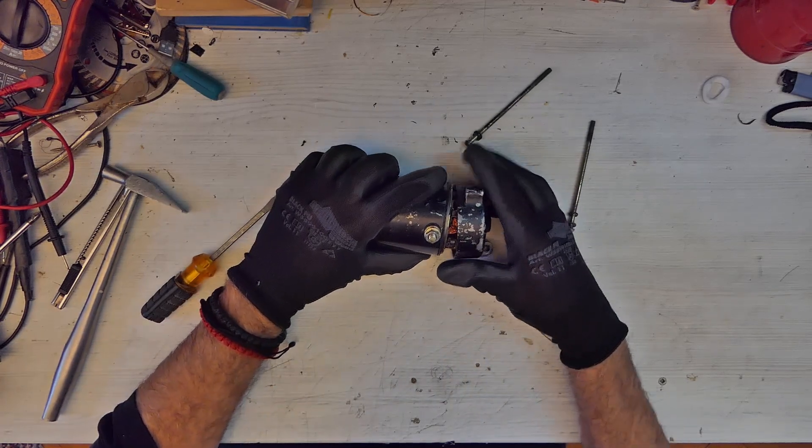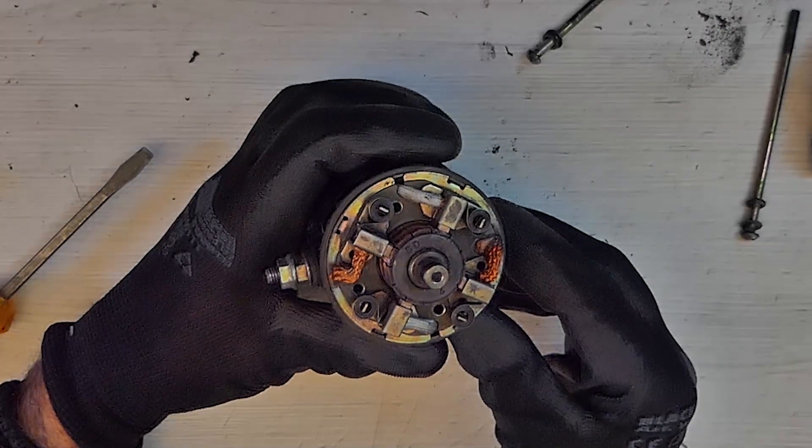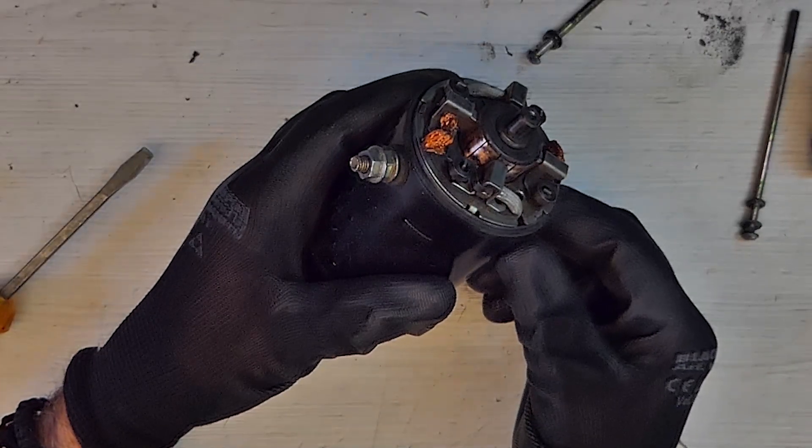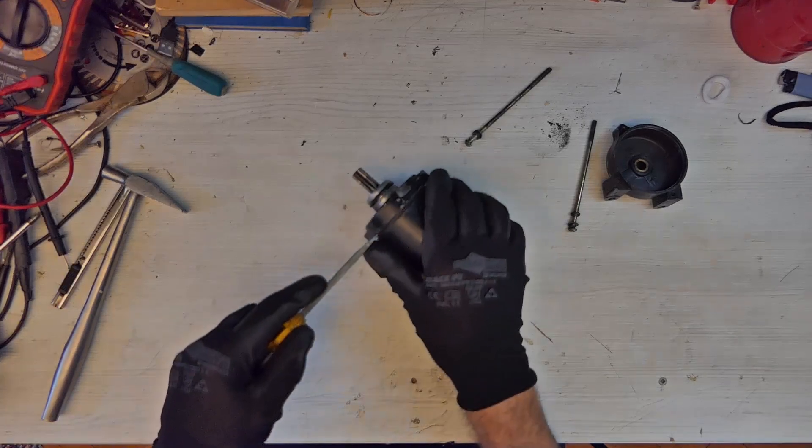Next, we remove the brush holder cover. Then we remove the other cover that holds the rotor.